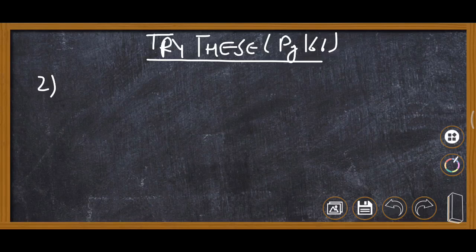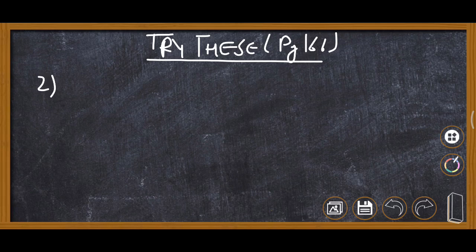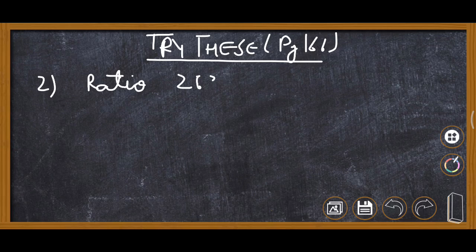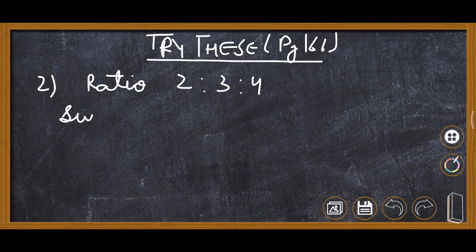Question number 2: If angles of a triangle are in the ratio 2:3:4, find the value of each. The ratio of angles is given: it is 2:3:4. So first of all we will find sum of ratio.